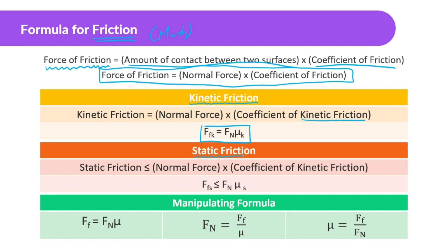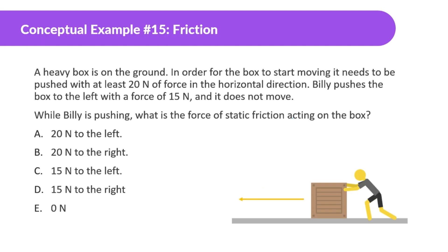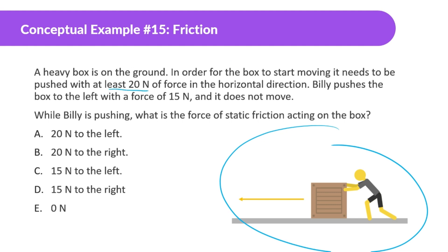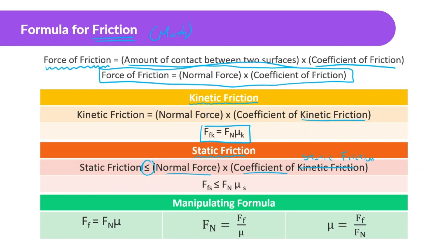Static friction is slightly more complicated but pretty similar. Force of friction static is less than or equal to the normal force times the coefficient of static friction. Why less than or equal to? If we go back to our last example — in order for the box to start moving it needs to be pushed with at least 20 newtons, so it has a maximum static force of 20 newtons. However, if Billy pushes the box with 15 newtons, the force of static friction is also going to be 15 newtons in the opposite direction. That's why we have less than or equal to — it can be less than the maximum value, or equal to the maximum value.